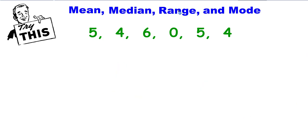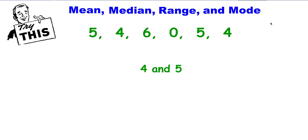To find the range of a set of numbers, you take the biggest number and subtract the smallest. So the range is 6. To find the mode in the set of data, it's the numbers listed the most, and both 4 and 5 are listed twice.